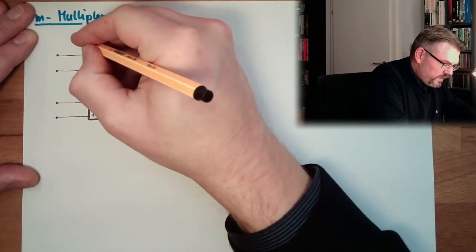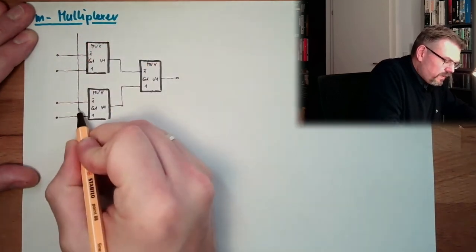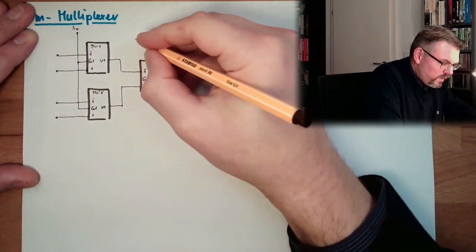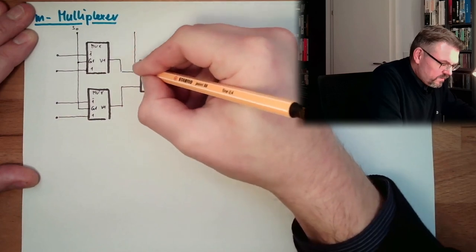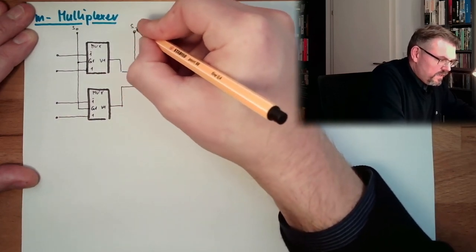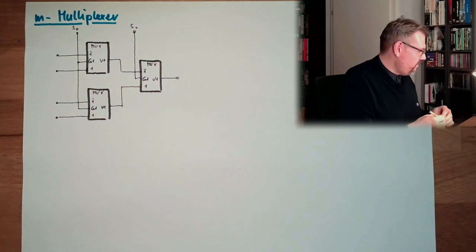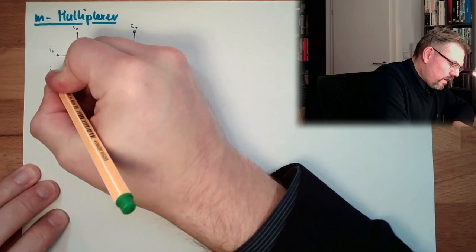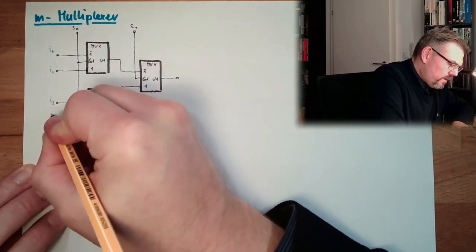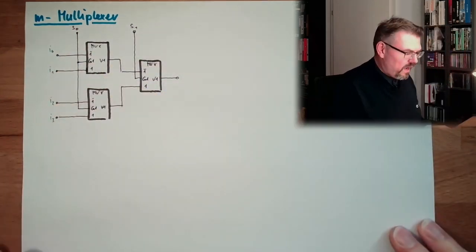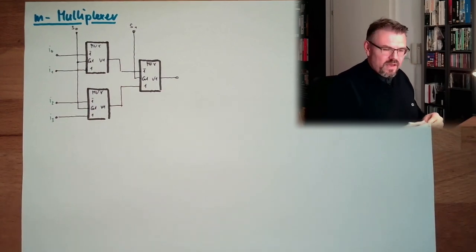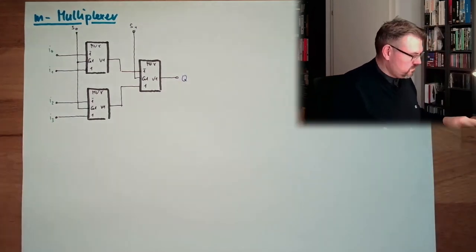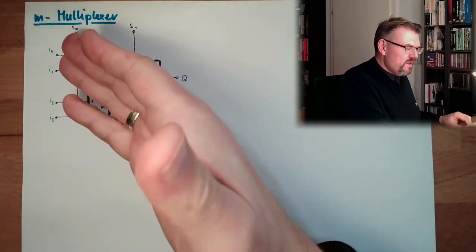And we have two selection lines. One is selecting the first row of multiplexers, this is S0. One is selecting the second column of multiplexers, S1. So we have here our inputs I0, I1, I2, and I3. And now let's think, what is appearing at the output Q, if we have different S.